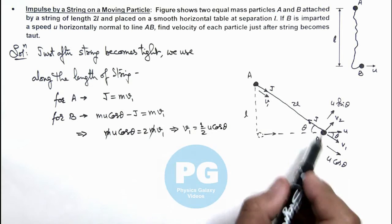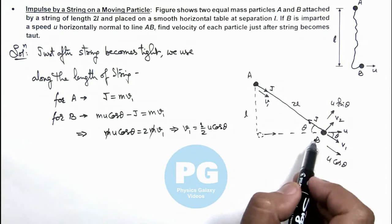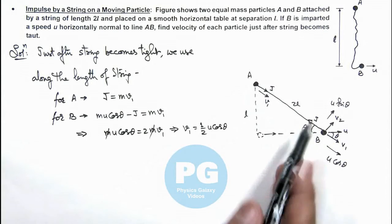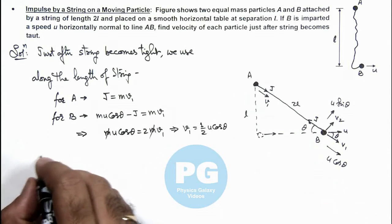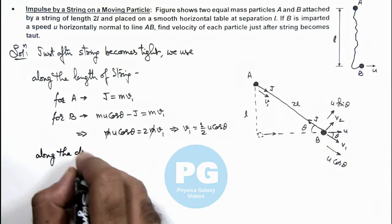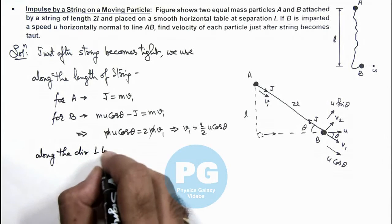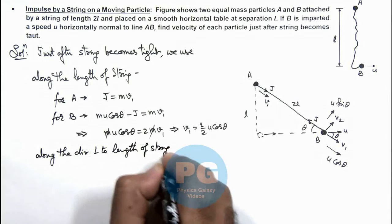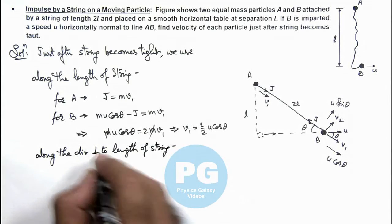And now if we talk in the direction perpendicular to the line of string, as no impulse is there on it we can write along the direction perpendicular to length of string, here we can write.